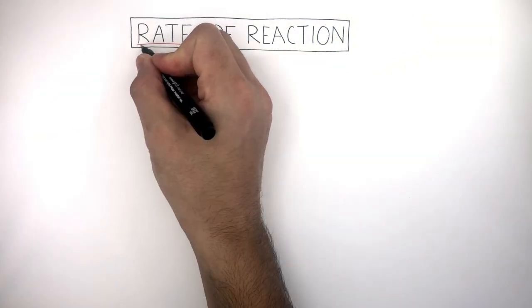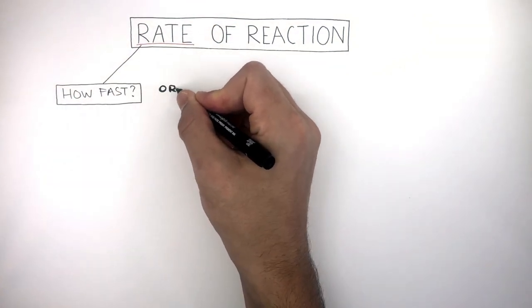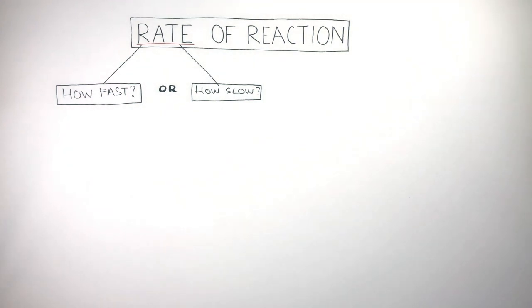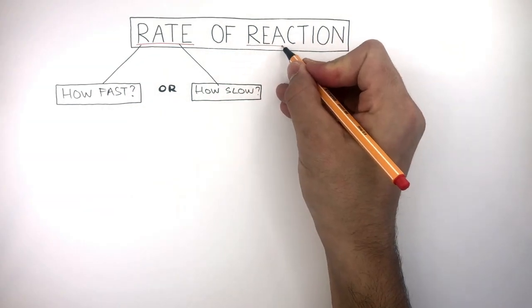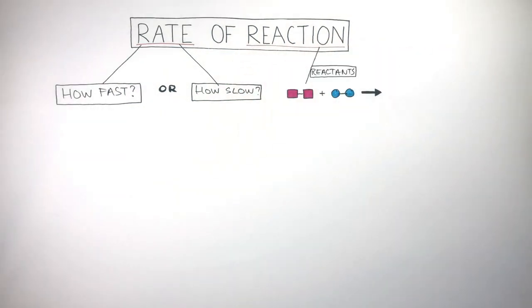The word rate means how fast or how slow something happens. And the reaction is when reactants form new products. The bonds between the atoms in the reactants break and new bonds form to make new products. So the rate of reaction is just how fast or how slow a chemical reaction takes place.